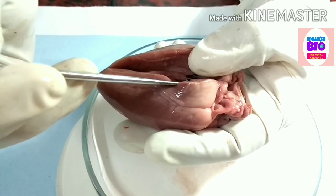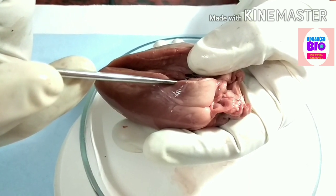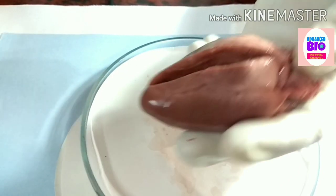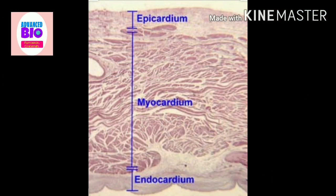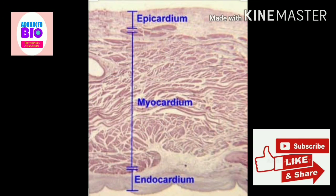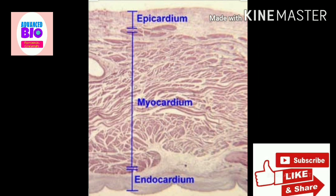Come to the computer and see the three layers. This is the microscopic image of the layering of the heart — that is the histology of the heart. From the outside, the outermost layer is the epicardium, the middle layer is the myocardium, and the innermost layer is the endocardium.